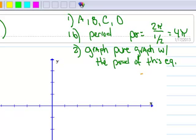The next thing we want to do is graph the pure graph with the period of this equation. Recall that the cosine—sometimes I like to make myself a little mini picture to remind myself. Remember the sine goes like that, that's the sine curve, and the cosine starts at a maximum and ends at a maximum. This period is going to be 4π, so let's go ahead and make our axes.